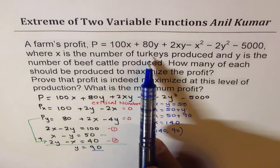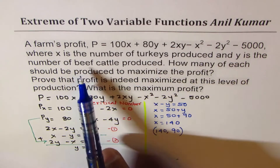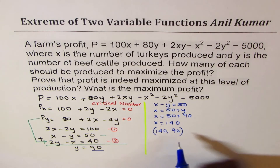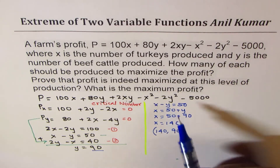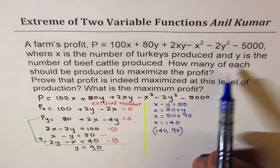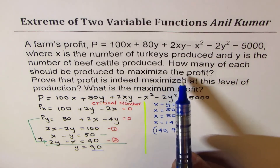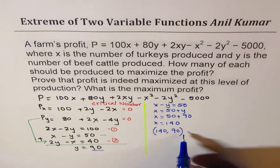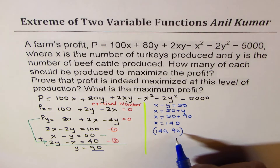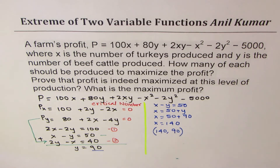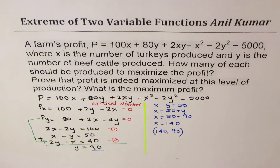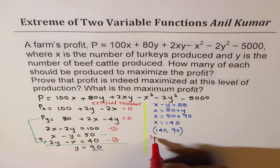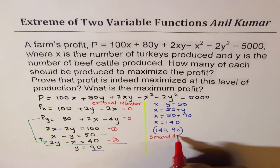So if you read this, x is the number of turkeys and y is the beef cattle produced — that is turkey and cattle. Now we've found the critical number. How do we know whether this critical number represents a maximum or a minimum value, or neither? To find that, we will do the second derivative test.